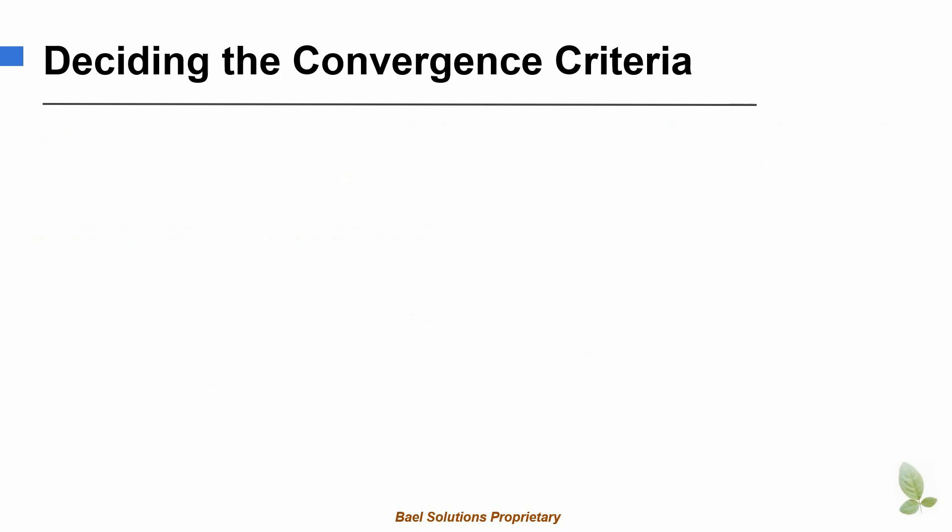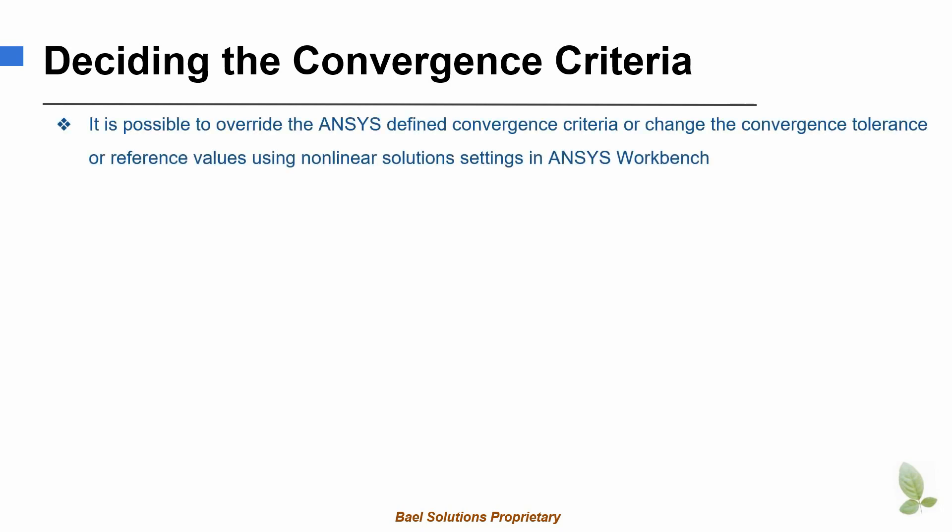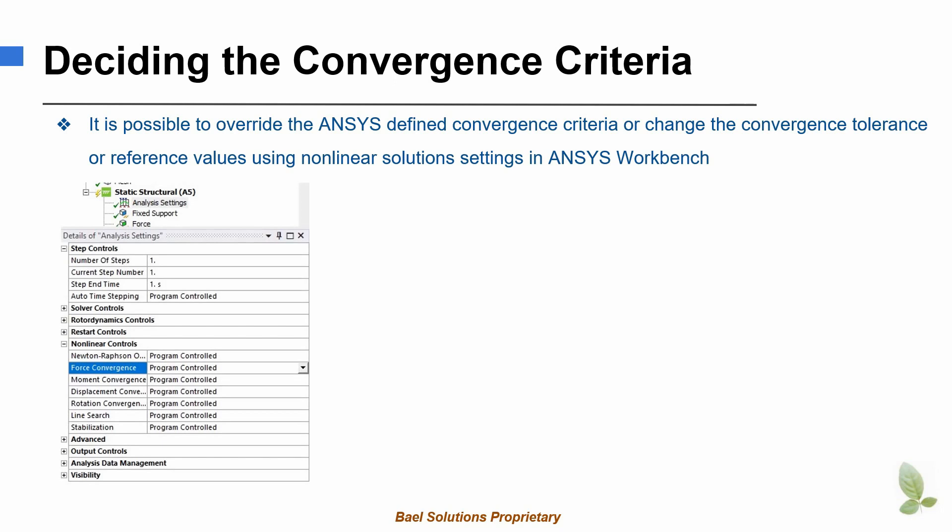In the last slide, we saw how a convergence criteria is set to a very small but a non-zero number. In this slide, we are going to see how it is possible to verify or change the convergence criteria. We can verify or change convergence criteria in ANSYS by going to the details window of the analysis settings.